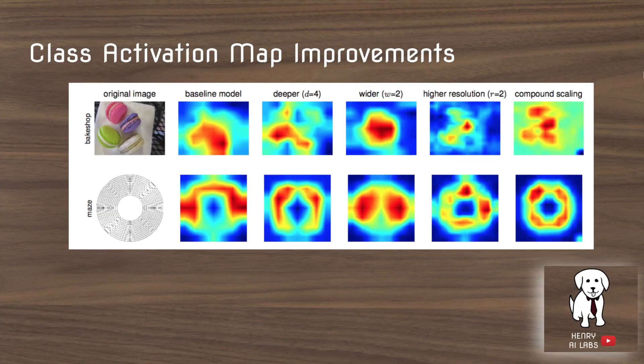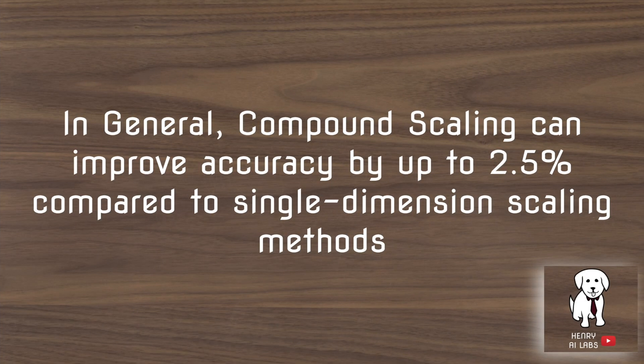Class activation map improvements show how class activations change based on the upsampling. The class activations indicate what in the image is controlling the output class. It's really interesting to see the heat map on the macaroon image converge so that all the heat is on where the actual macaroons are. In general, their experiments find compound scaling improves accuracy by up to 2.5% compared to scaling up single dimensions like width, depth, or resolution alone.